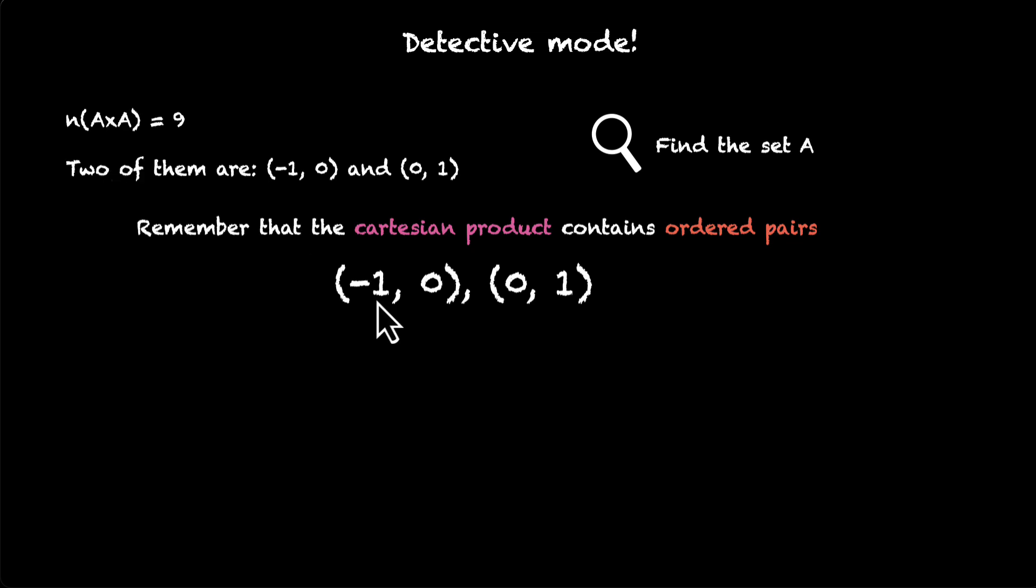So the first thing that we can note here is -1 and 0, they definitely belong to A. So A definitely has -1, and similarly we can say that 0 and 1 also belong to A. This tells us a lot about A. So far we have three elements of A, minus 1, 0 and 1. Can we find more? Do we need to find more? Let's look at the first clue.